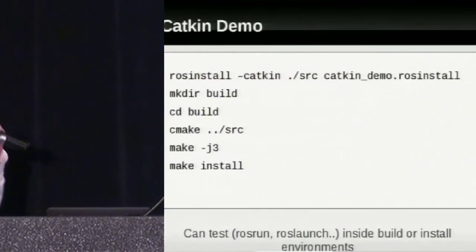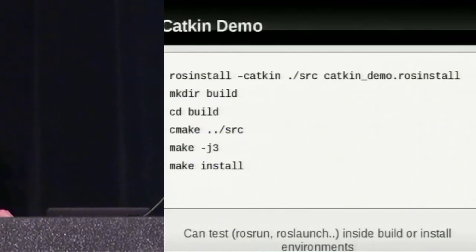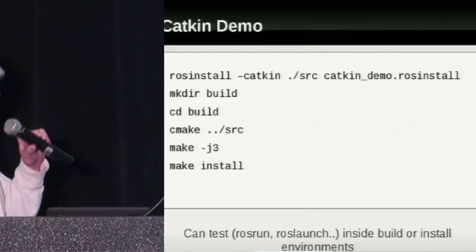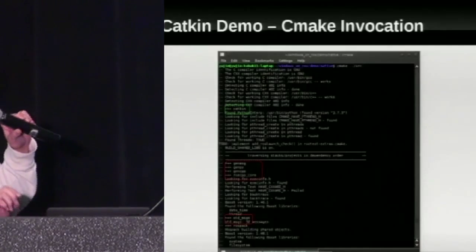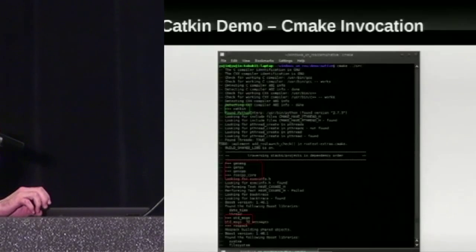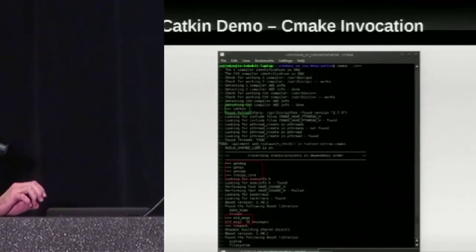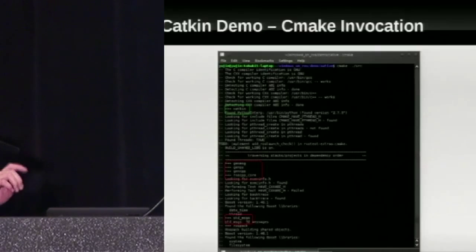To build a set of Catkin stacks, you ROS install your list of stacks, put that into a source directory, make a parallel build directory, then invoke CMake, compile it, and make install. Very simple. During the CMake step, you can see it traversing the entire stack tree. It starts out with Catkin which sets everything up, and then traverses the different stacks that have been built by Catkin.